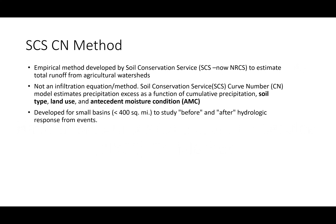So what is the SCS-CN method? Basically this is an empirical method that was developed by the Soil Conservation Service to estimate total runoff from agricultural watersheds. So if you know the total amount of rainfall, in order to find out the total amount of direct runoff you can use this method.